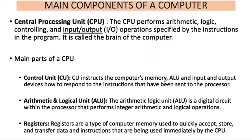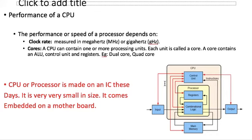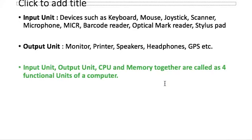Performance of a CPU depends mainly on two factors: clock rate and cores. Clock rate is measured in megahertz or gigahertz. Cores contain more than one processing unit — each unit is called a core (e.g., dual core, quad core, eight core). The CPU processor is made on an IC these days, very small in size, and comes embedded on a motherboard.